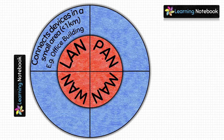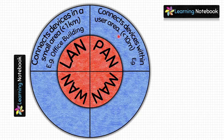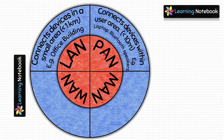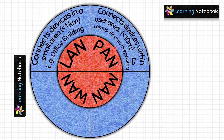Next let's write about PAN. PAN connects devices within a user area of less than 10 meters. When you connect a laptop to your Bluetooth speakers, you use PAN — Personal Area Network. Similarly, when you use a remote for your television, you are also using PAN. You can give these examples: laptop with Bluetooth speakers.